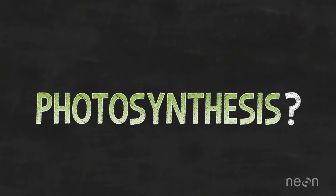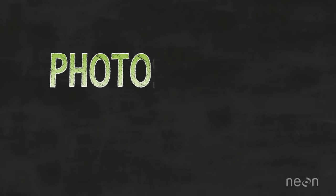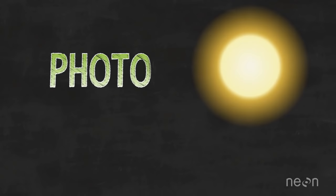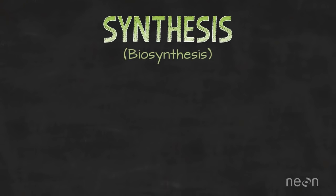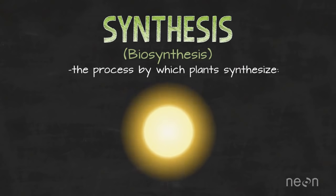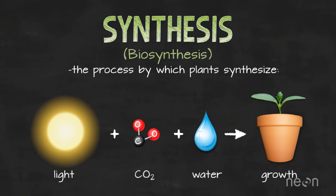So let's first talk about that carbon-generating process called photosynthesis. The photo part in photosynthesis relates to light. Plants use energy from light to grow. Synthesis relates to biosynthesis, or the process in which plants synthesize light, carbon dioxide or CO2, and water to grow.